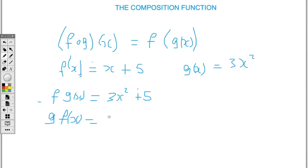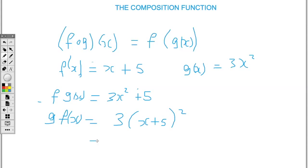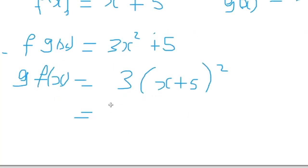If I ask for g of f(x), then I'll be substituting the variable x with x plus 5. So I have x plus 5, all squared. All I did was replace x with x plus 5, but here I have it all squared. So what we can go ahead and do is expand the brackets.